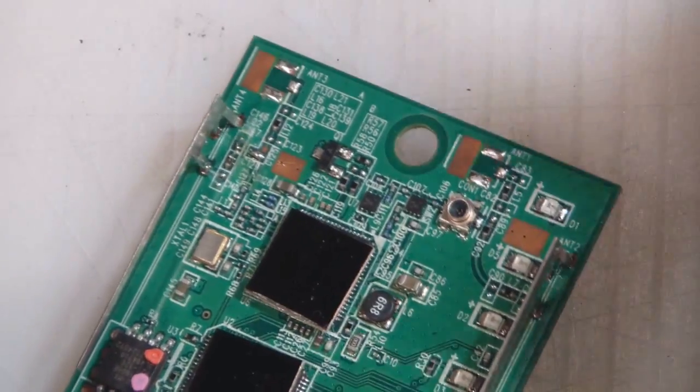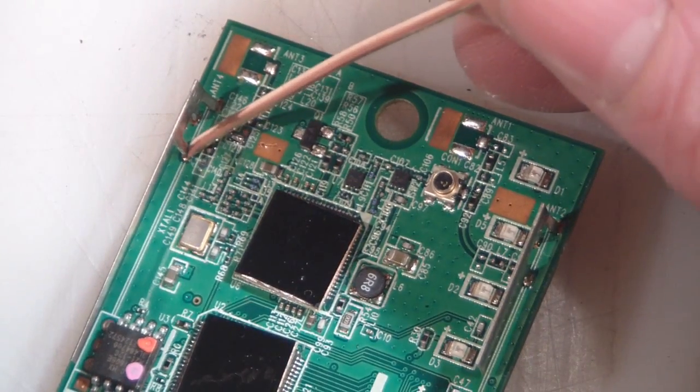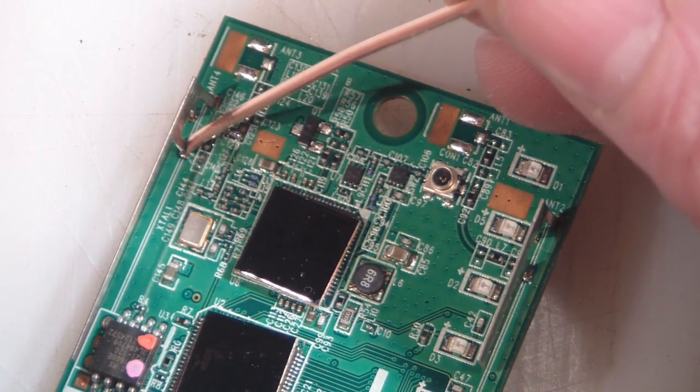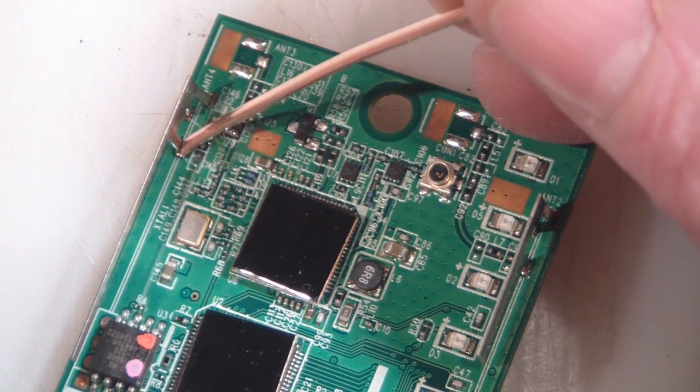I'm going to desolder these antennas off here. This pin just here is where I'm going to solder my driven element center conductor of the coax to. Same on this side, it's this pin here.